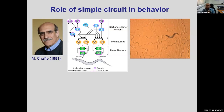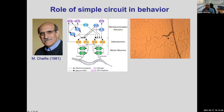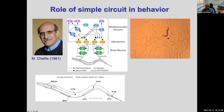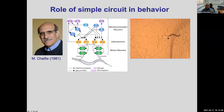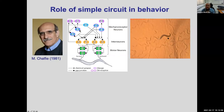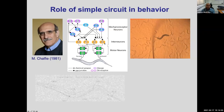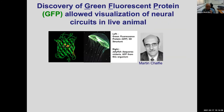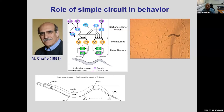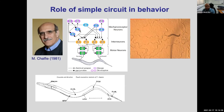This wiring diagram allows us to ask how behavior works. Martin Chalfie asked how a simple behavior like touch sensation is generated. His lab used an eyelash to touch the worm; when touched it shows a reversal response. He figured out this response is due to the underlying circuitry. Because C. elegans is transparent, he could ablate specific cells using lasers and established that six neurons are responsible for gentle touch sensation. Forward genetics also allowed identification of mechanoreceptors and other components responsible for touch sensation.